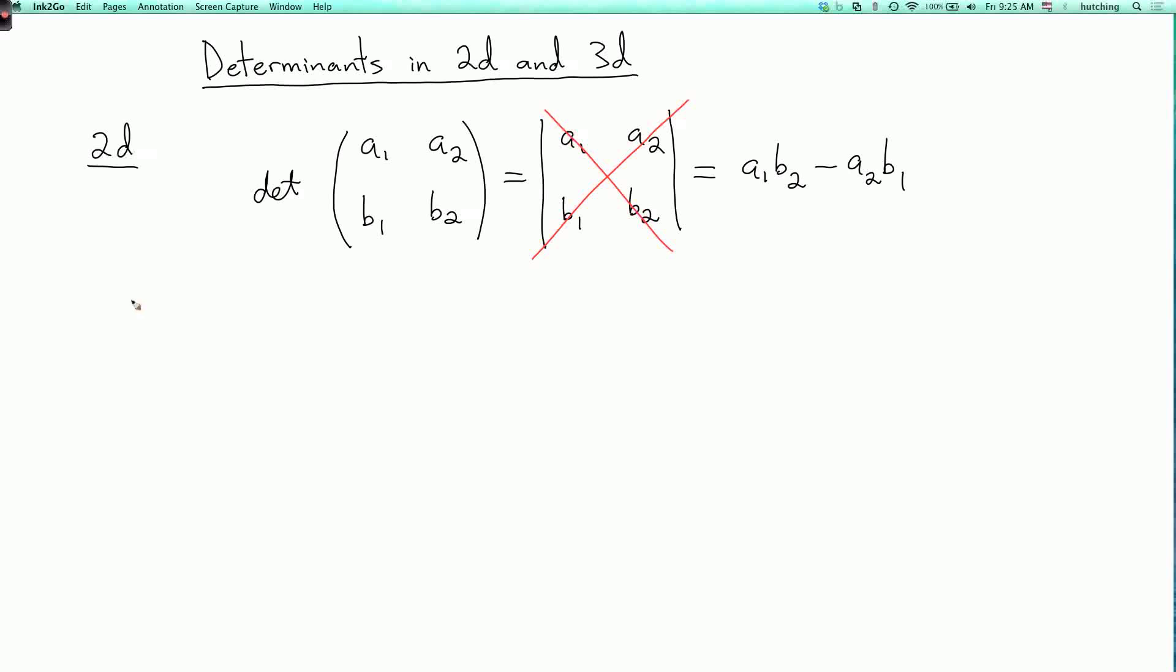The geometric meaning of the determinant is as follows. Let's consider the vectors a equals a1, a2, and b equals b1, b2. Out of these vectors, we can make a parallelogram. So here I have two copies of the vector a, and two copies of the vector b.